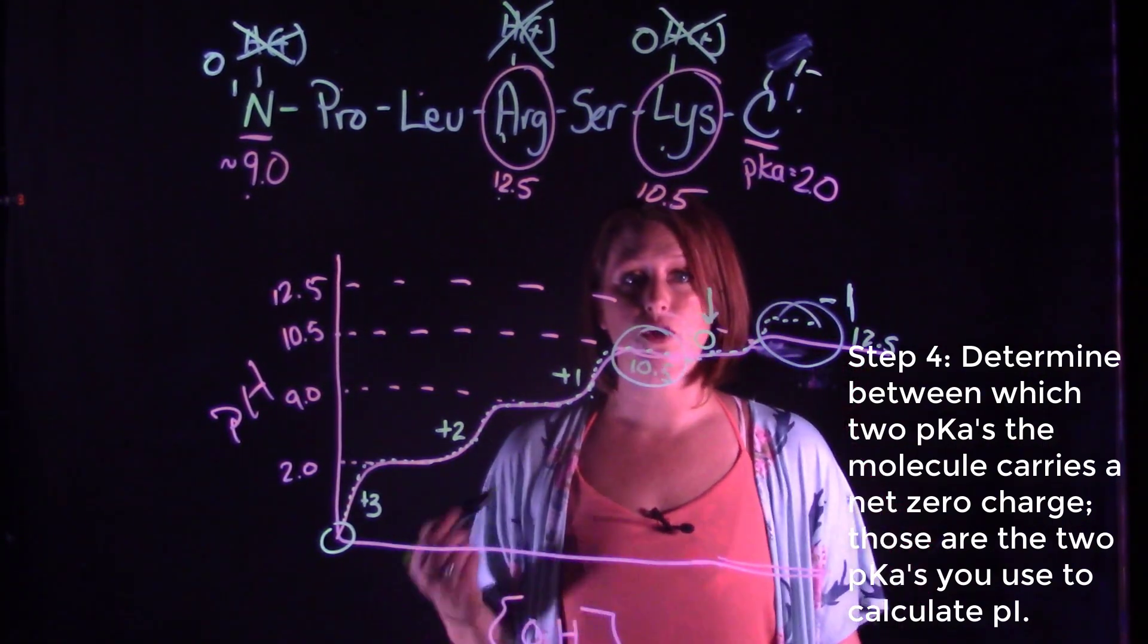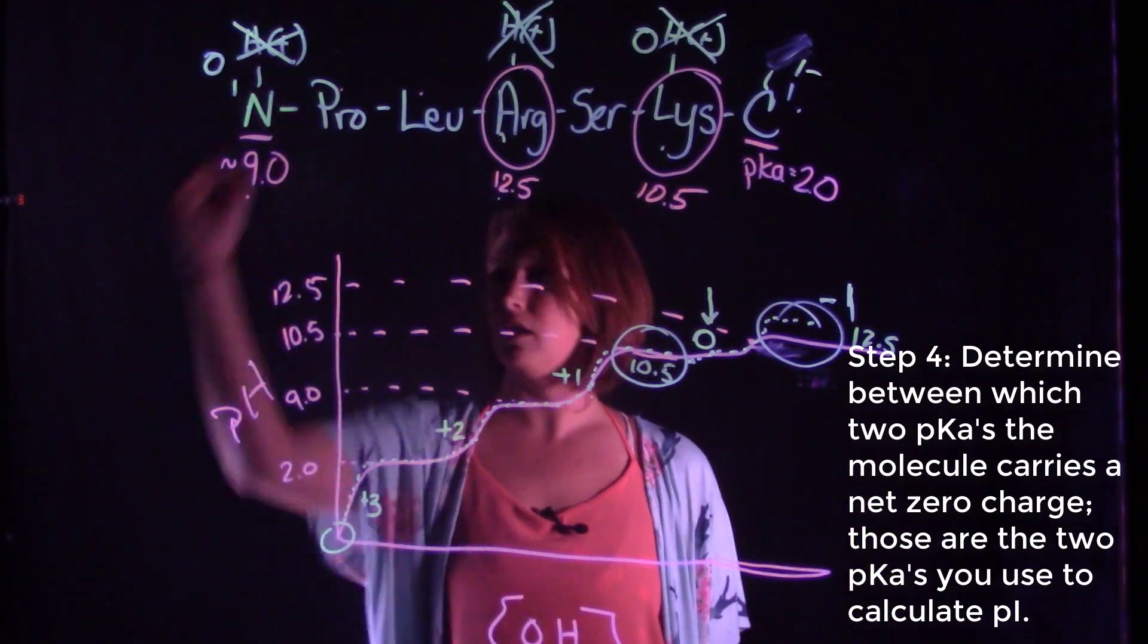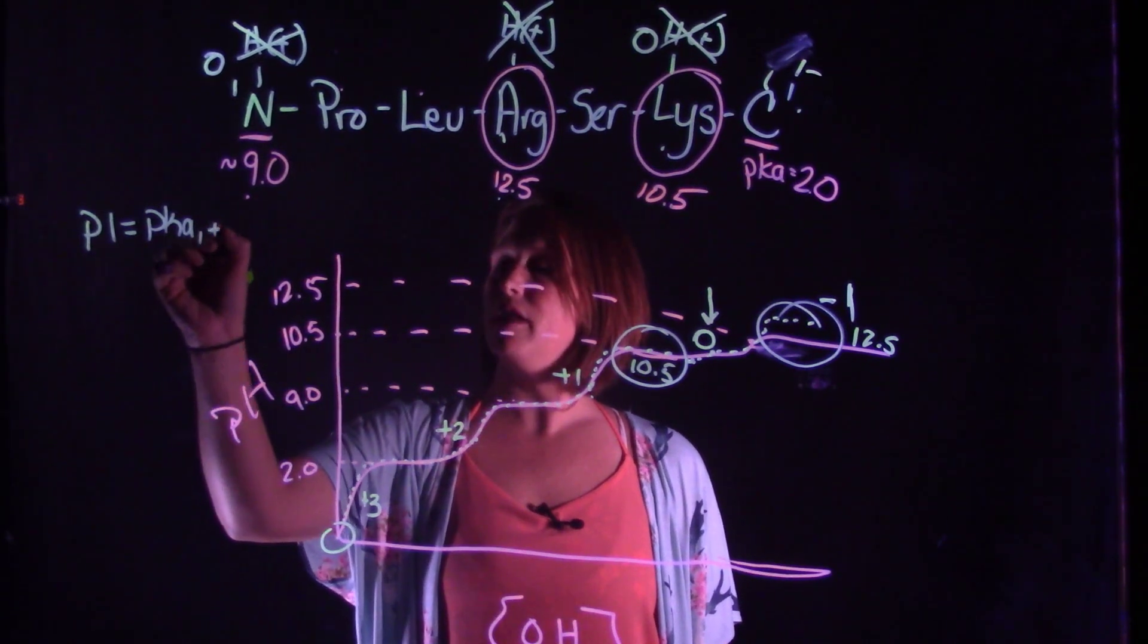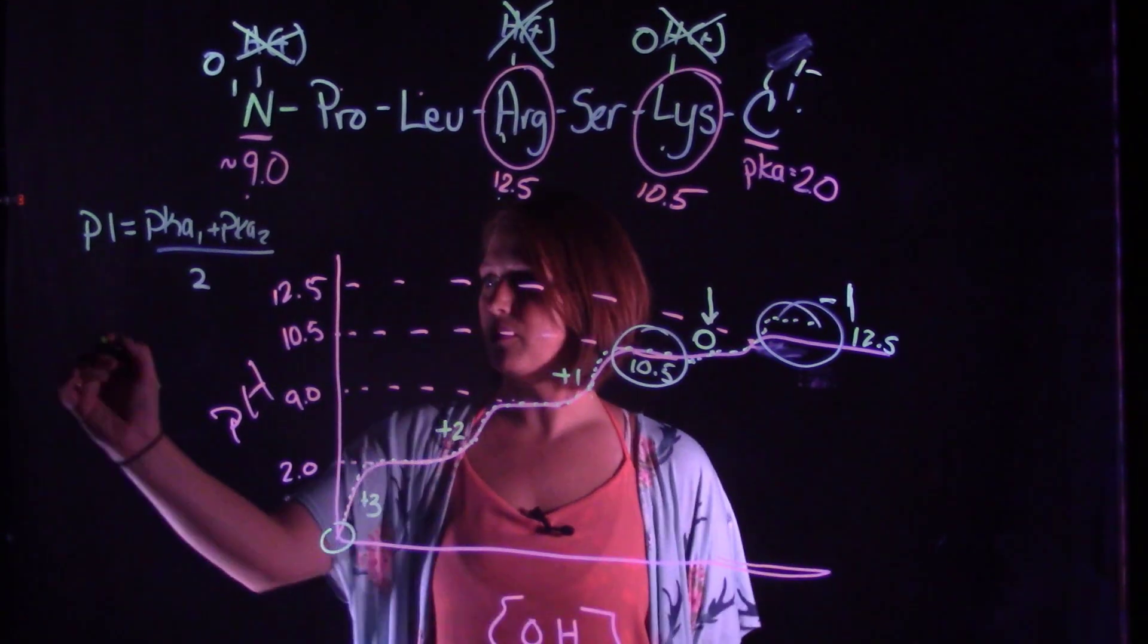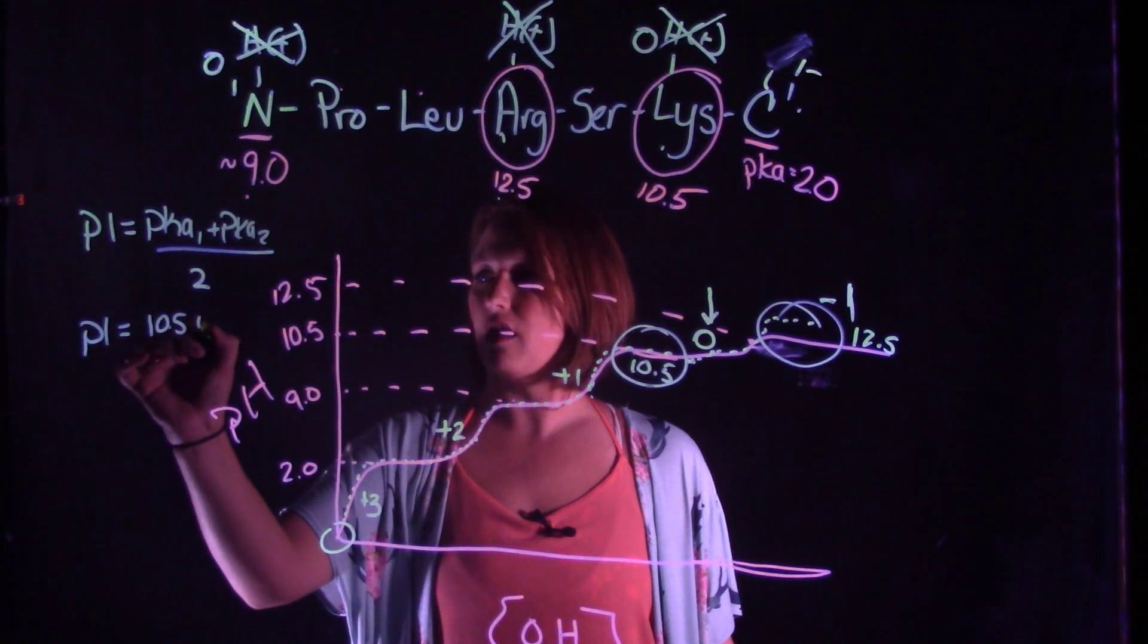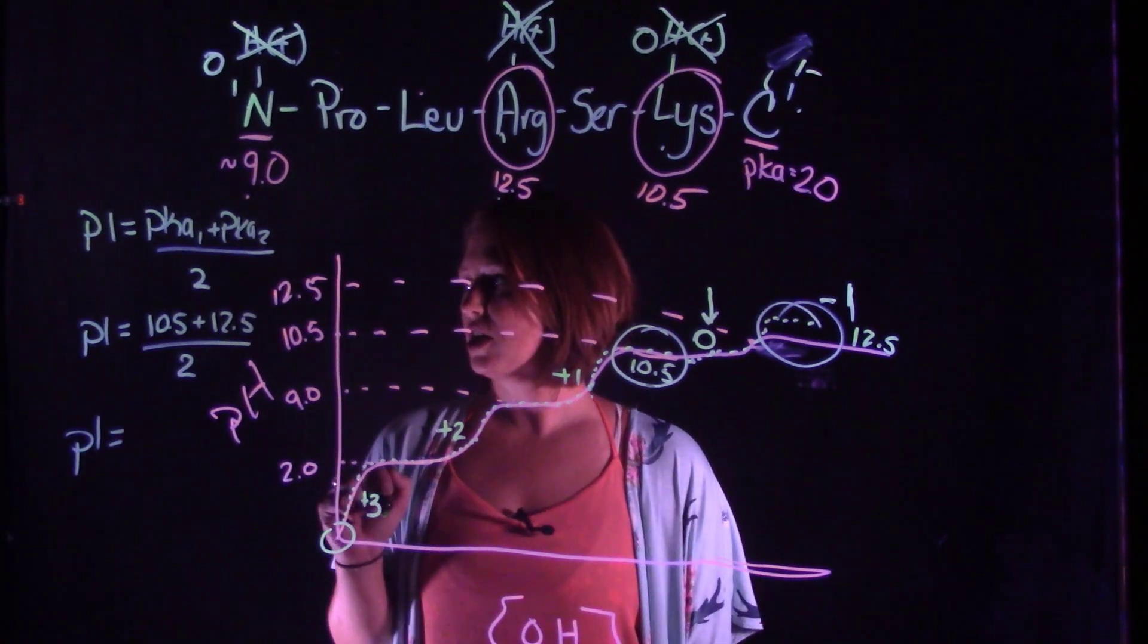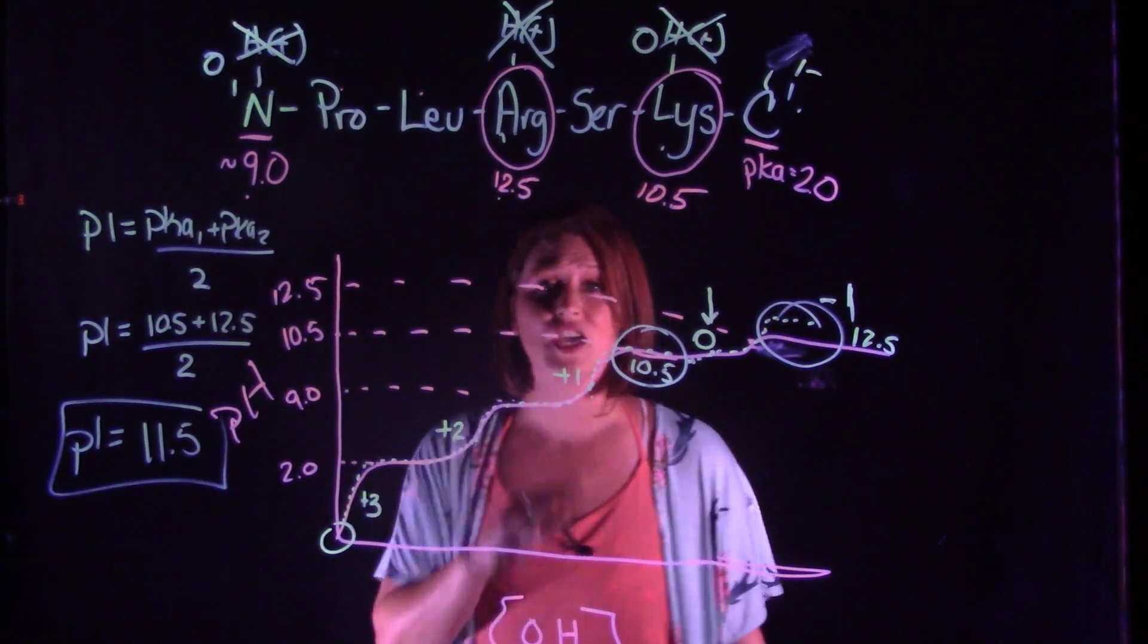So remember, the pI is equal to pKa1 plus pKa2 over 2. So for our example, pI is going to be equal to 10.5 plus 12.5 over 2. And if we plug and chug, we should come up to an answer of 11.5.